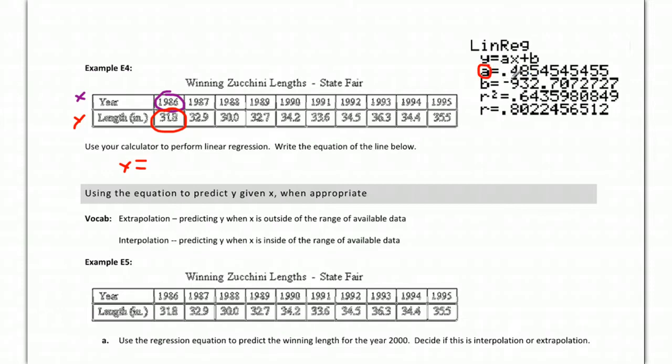A is given to us, so a, if you rounded off to three decimals, is 0.485. So y equals 0.485, and then it says x, so we're going to leave y and x as y and x.